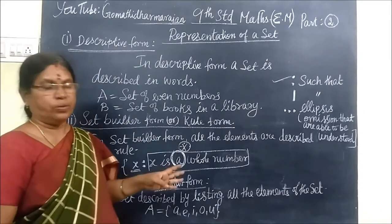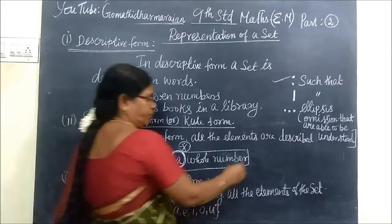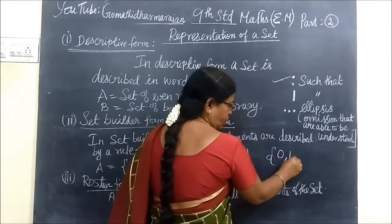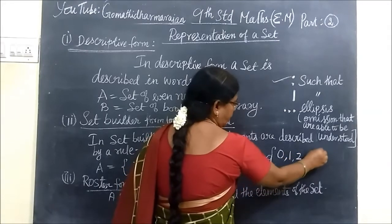Whole number starts from 0. So if we write it out, you can get the answer as 0, 1, 2, etc., like this.